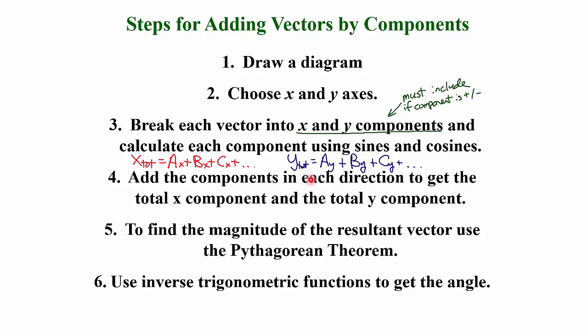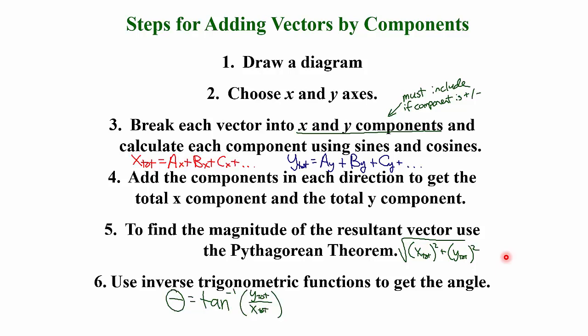Once you have the components of your resultant vector, calculate the magnitude and direction using the Pythagorean theorem and inverse trig. The magnitude of the resultant vector is the hypotenuse, so it's the square root of the X component squared plus the Y component squared. To get the angle, we typically want it relative to the X axis, so we use the inverse tangent of Y total over X total.